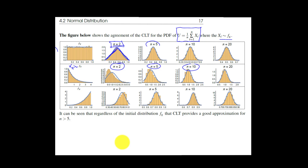The number of variables you need to add before the normal is a good approximation depends on which distribution you're adding. For the uniform it takes about three; for the exponential or other skewed distributions it takes around ten. The key idea: linear combinations of random variables all end up looking normal after enough terms.